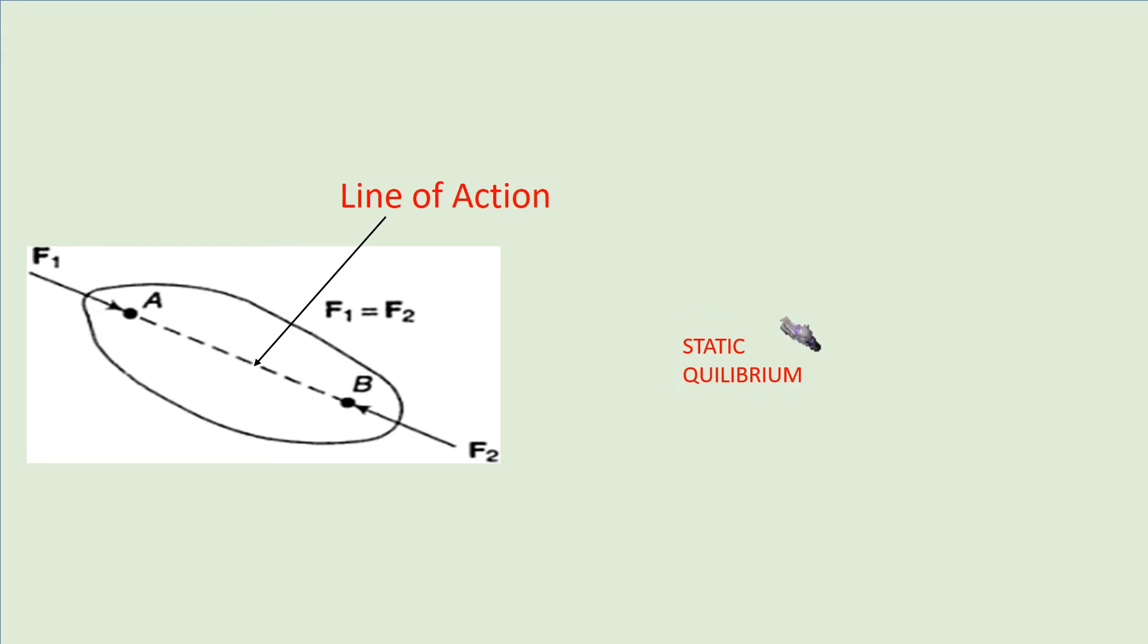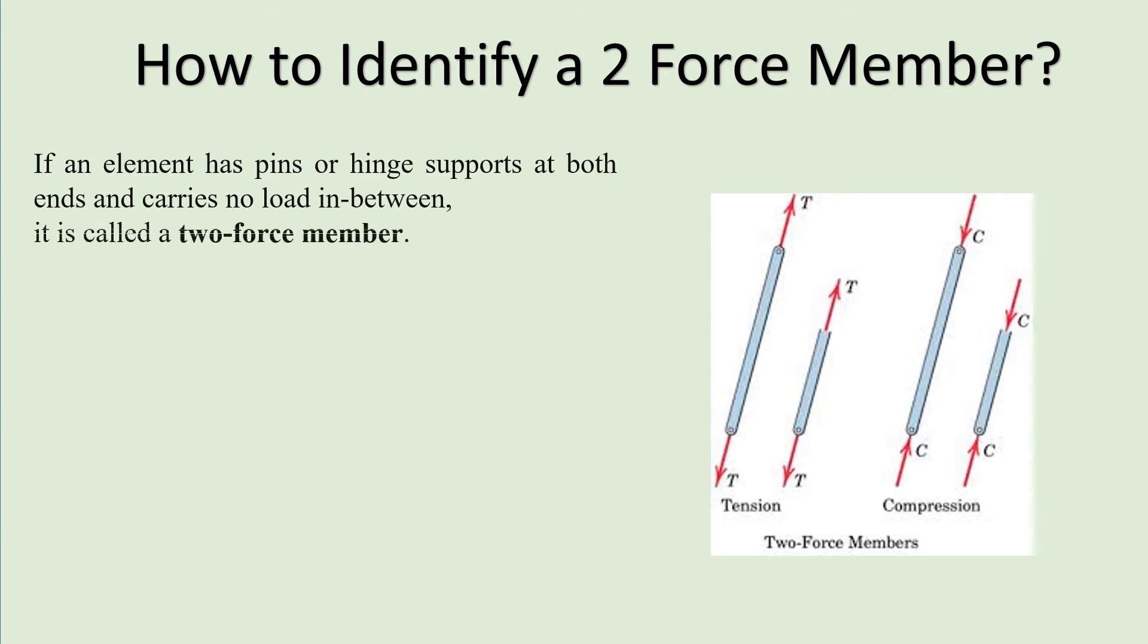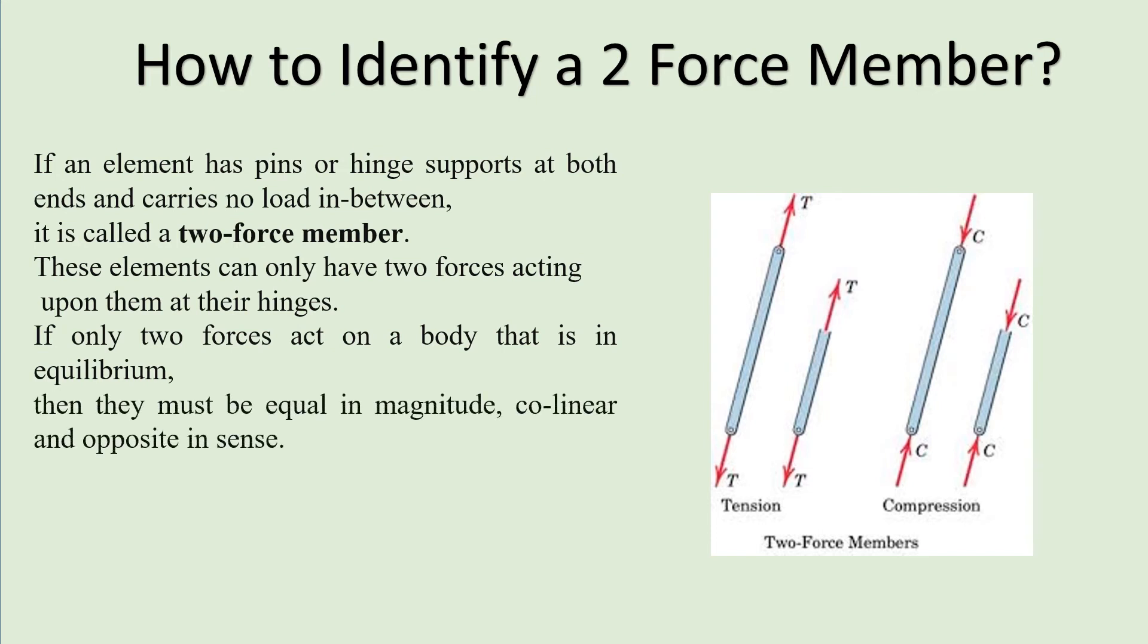How to identify which member or element is a two-force member? If an element has pin or hinge supports at both ends and carries no load in between, it is called a two-force member. These elements can only have two forces acting upon them at their hinges. If only two forces act on a body that is in equilibrium, then they must be equal in magnitude, collinear, and opposite in sense. This is known as the two-force principle.